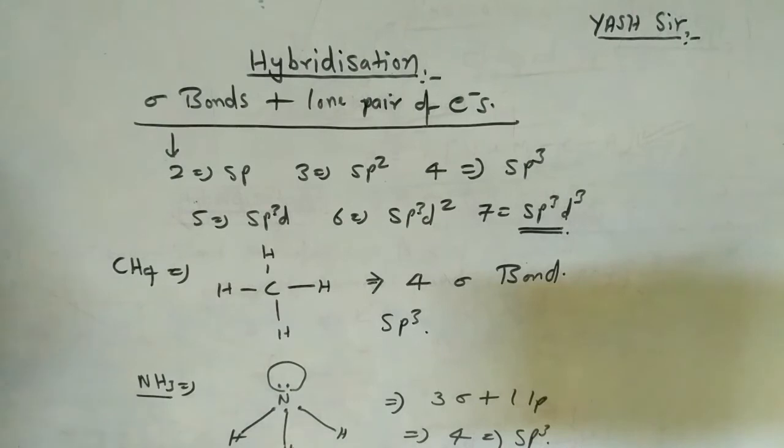Now take a tougher example: PCl5. So here is phosphorus, here is chlorine, chlorine, and chlorine. The structure of PCl5 is trigonal bipyramidal.